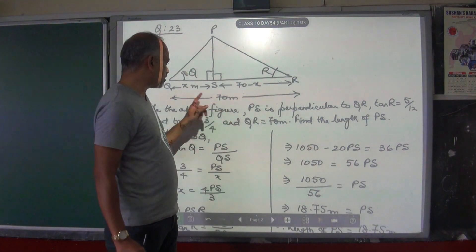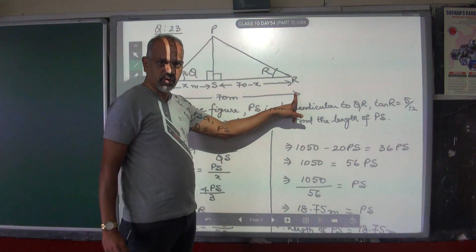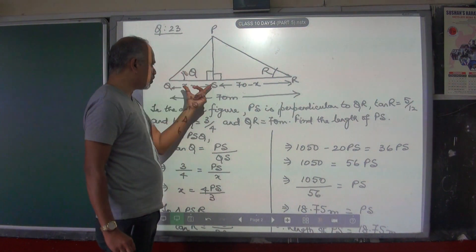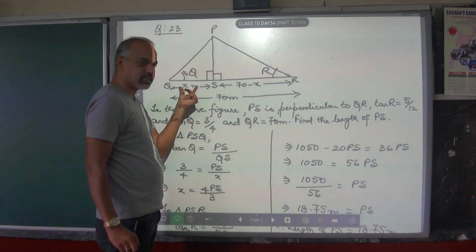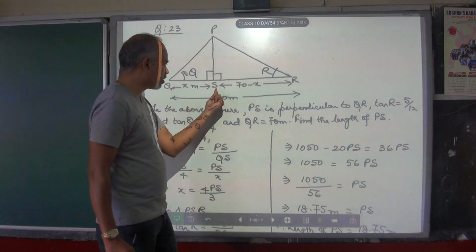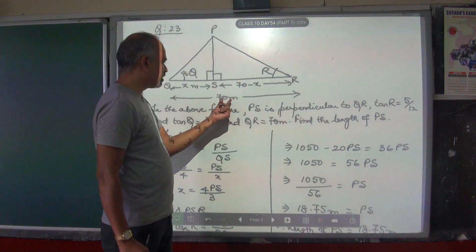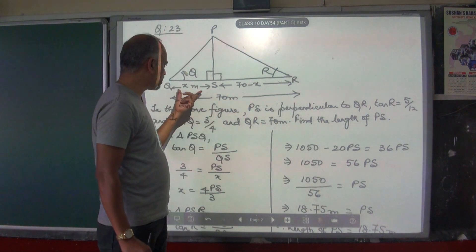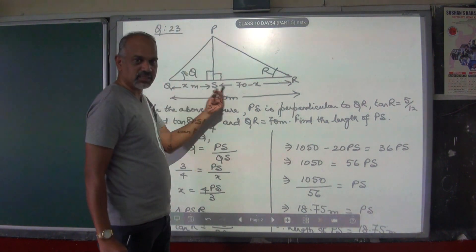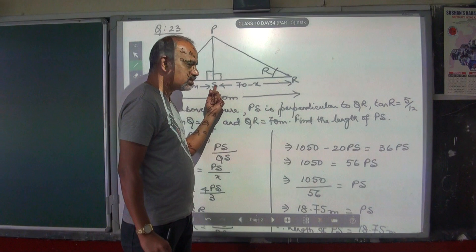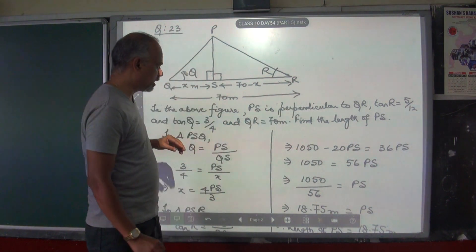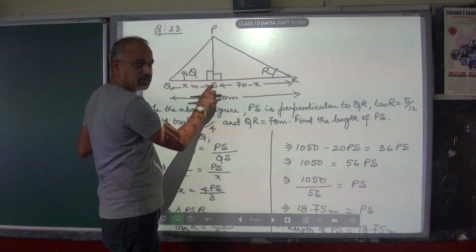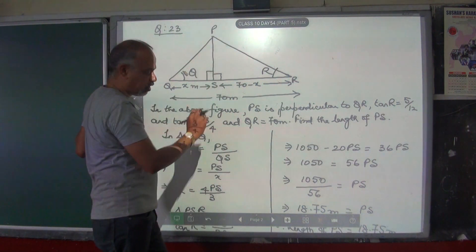I know this whole length, so I am going to split it into two parts. I am going to assume Q to S is X meters. Therefore S to R becomes 70 minus X. Total length is 70, minus this distance X, which gives you distance SR. Find the length of PS — PS is this height — is what you need to find.